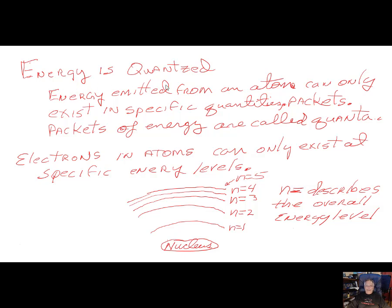Energy is quantized — energy emitted from an atom can only exist in specific quantities, called quanta. Electrons in atoms can only exist at specific energy levels. The ground state, the lowest energy state, is n=1. Then n=2 is further away from the nucleus, followed by n=3, n=4, n=5, and so on. We only need seven levels to describe all the elements in the periodic table.